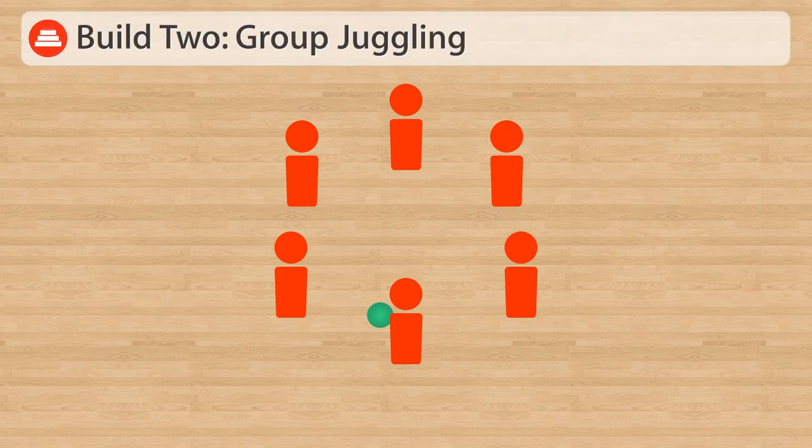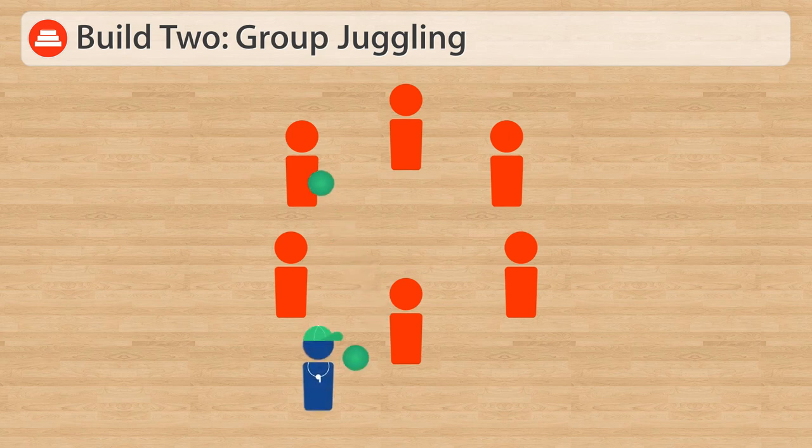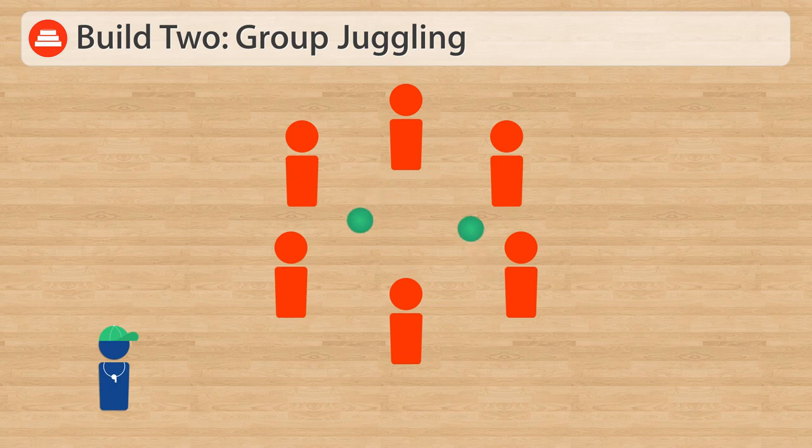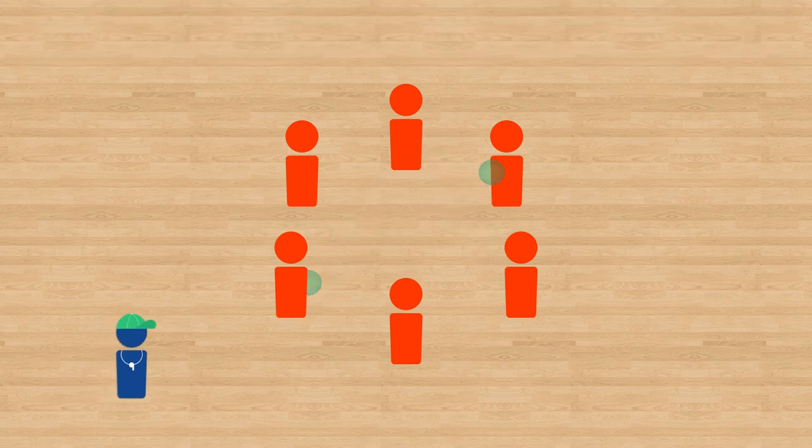In Build 2, students will continue to work on their passing pattern. However, once their pattern is developed, the teacher will come in and introduce a second ball into the game. Now students have to work on maintaining the same pattern, but by juggling two balls at a time. The teacher can continue to add more balls to the game to increase the complexity.